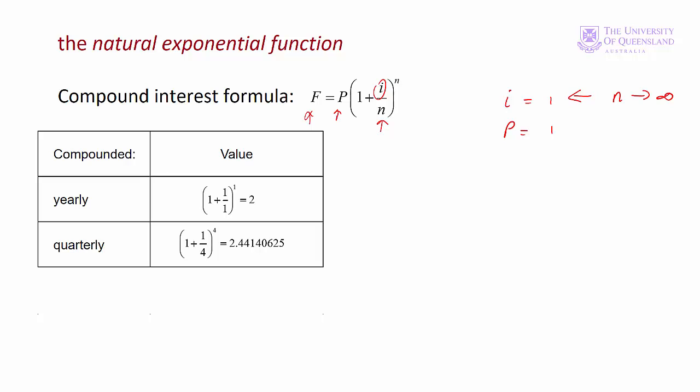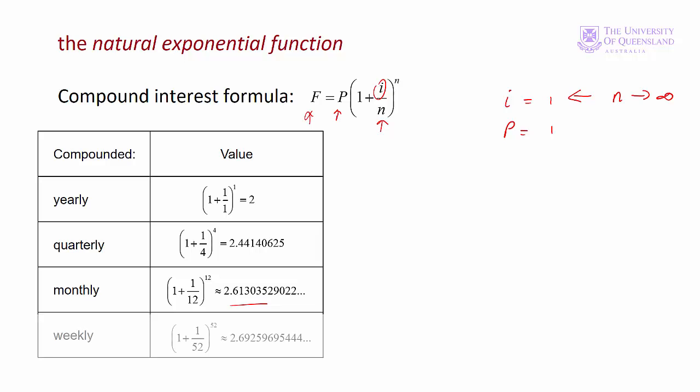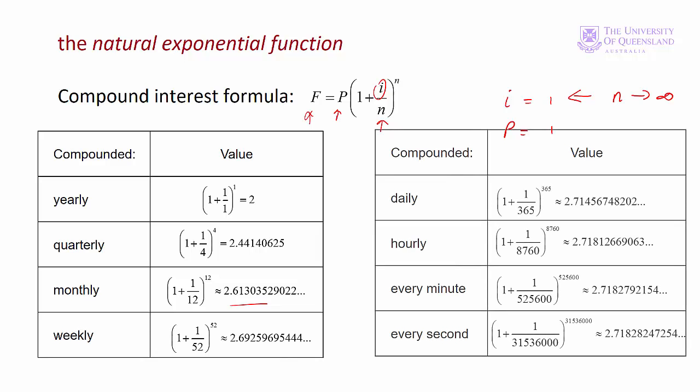Monthly compounding, that is compounding 12 times a year, our value becomes 2.61 approximately and so on. Weekly. What we see as we increase the number of compounding periods per year is the difference in the value from one calculation to the next gets smaller and smaller.